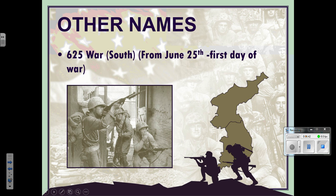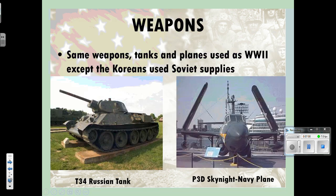There are other names for the Korean War. In South Korea they call it the 6-25 War because it started on June 25th. In North Korea they call it the Fatherland Liberation War — because in their view it's about liberating the South from their democratic allies, basically.